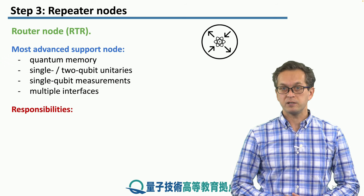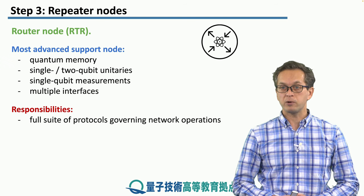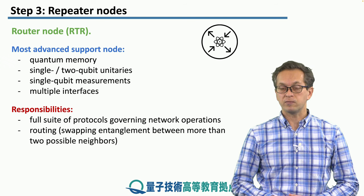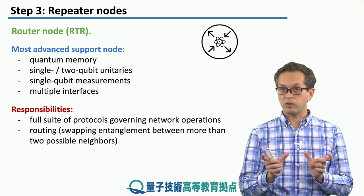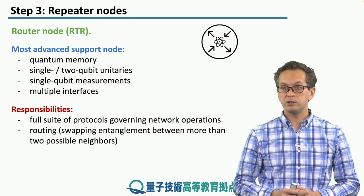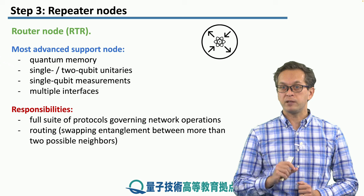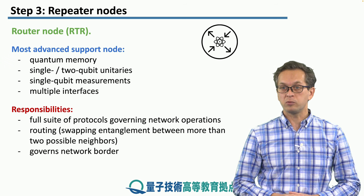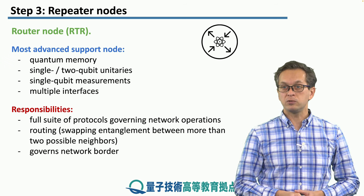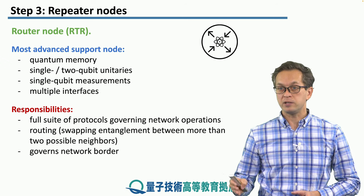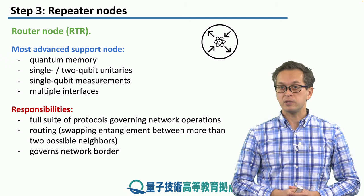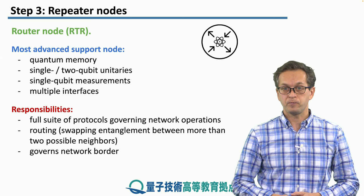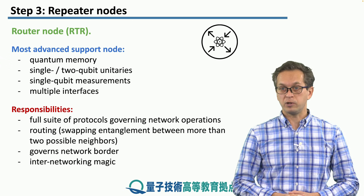The responsibilities of a quantum router are to run the full suite of protocols governing network operations, and as the name suggests, it takes part in routing. Imagine that you have three interfaces connected to a single router — it's the job of the router to determine where to perform entanglement swapping and which neighbors to entangle. It also governs the network border: if one quantum node is trying to distribute entanglement with another quantum node in a different network, it has to set up this entanglement via the quantum router, which communicates from network one to network two. This is how the internetworking magic happens.